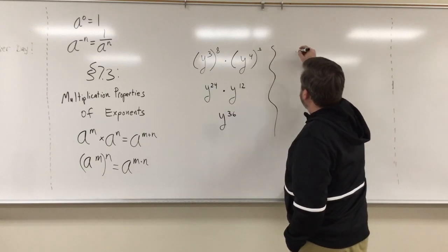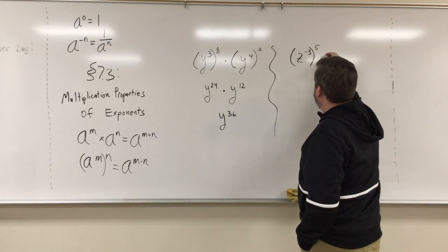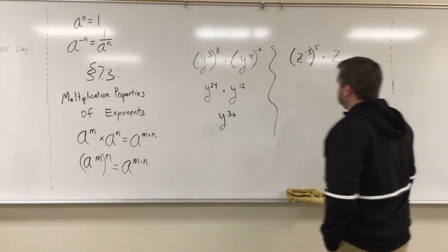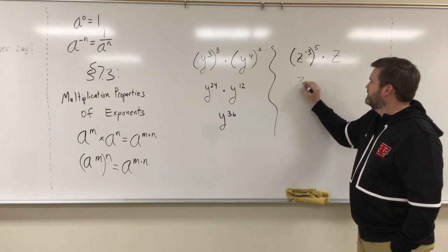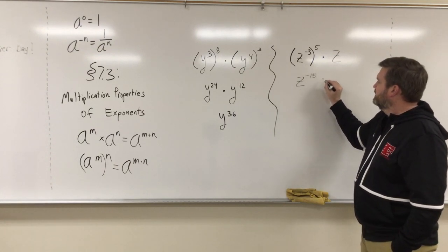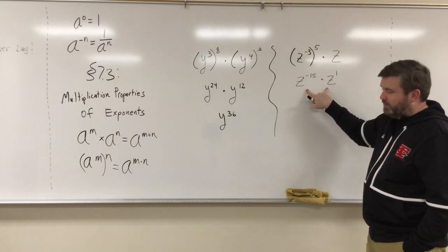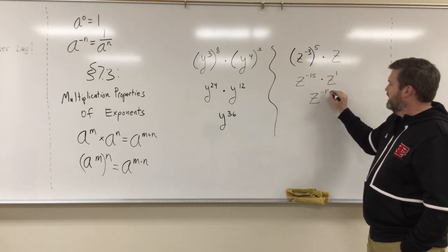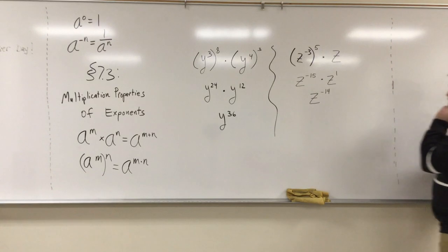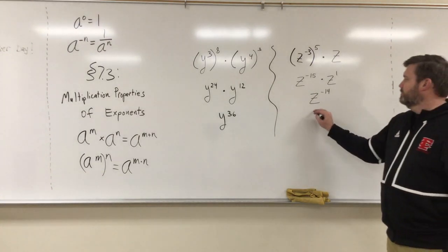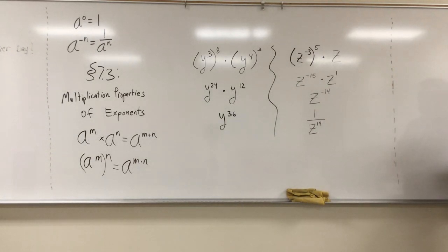Let's do a new one: (z to the negative third) all that to the fifth, times z. We use our power-to-a-power rule, so that's z to the negative 15, times z — technically z to the first. We're multiplying like bases so keep the base and add, giving z to the negative 14th. Remember you cannot stop if you have a negative exponent — you have to keep going. This would become one over z to the 14th, so that's our final simplified expression.